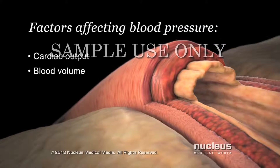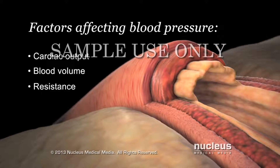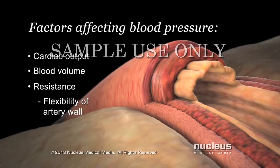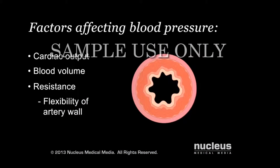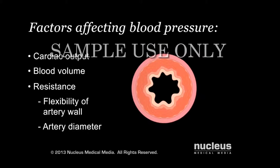The third factor that affects your blood pressure is resistance, which is anything working against blood flow through your arteries. Several factors contribute to resistance. One resistance factor is the flexibility of your artery wall — healthy arteries expand with each heartbeat to help reduce blood pressure on the wall. Another resistance factor is the diameter of your arteries. Your body can increase the diameter of your arteries to lower blood pressure, or reduce the diameter to raise it.